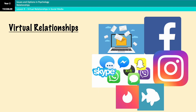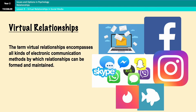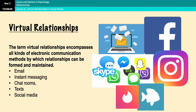The term virtual relationship refers to electronic communication methods by which relationships can be formed and maintained. For example, email, instant messaging, chat rooms, texts, and of course the more common and popular one in this day and age, social media platforms like Facebook, Twitter, Instagram, TikTok, Snapchat, Tinder, and a whole load of others.